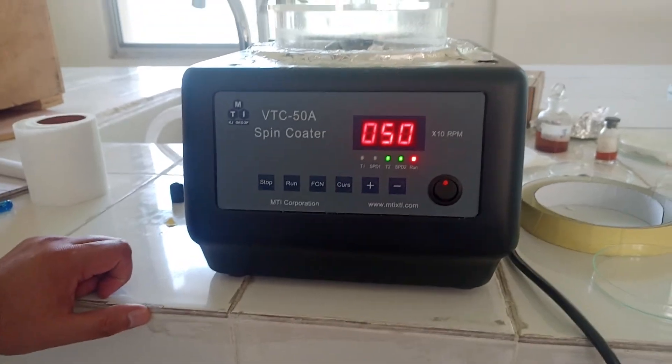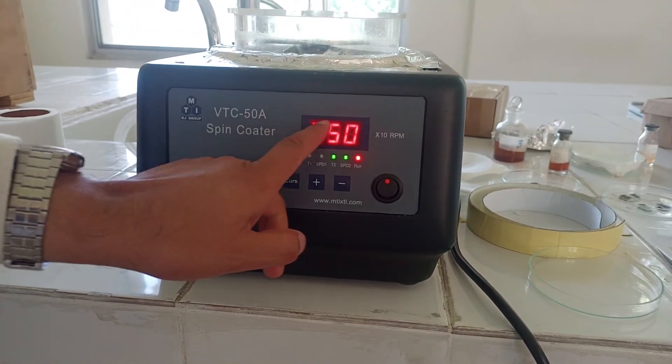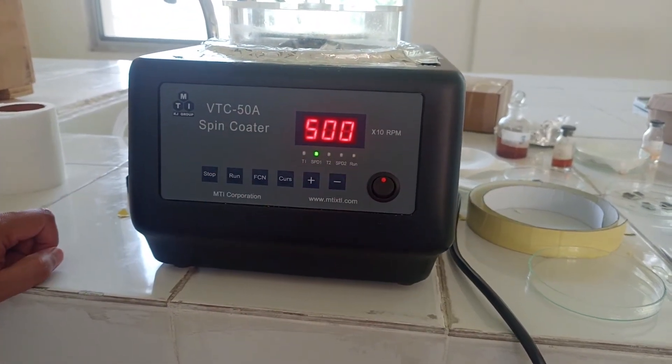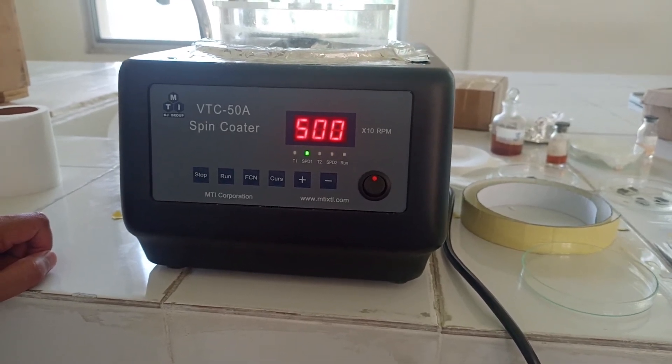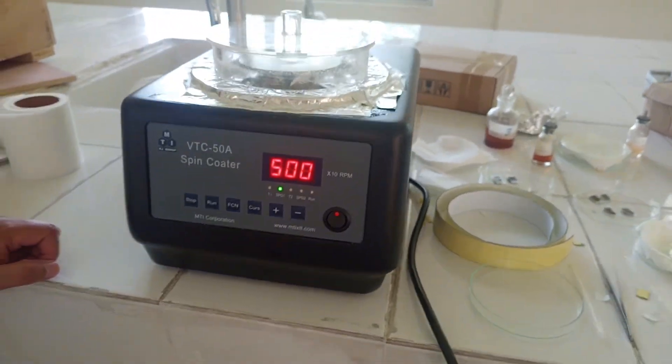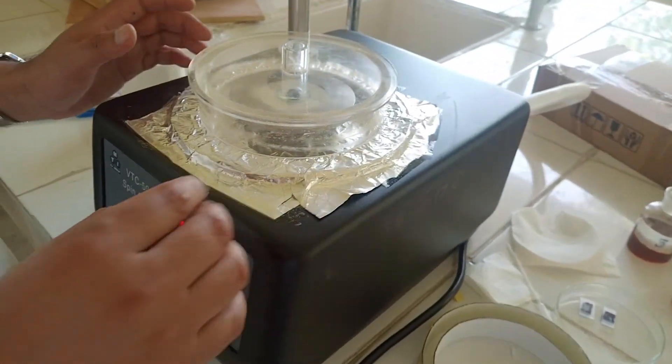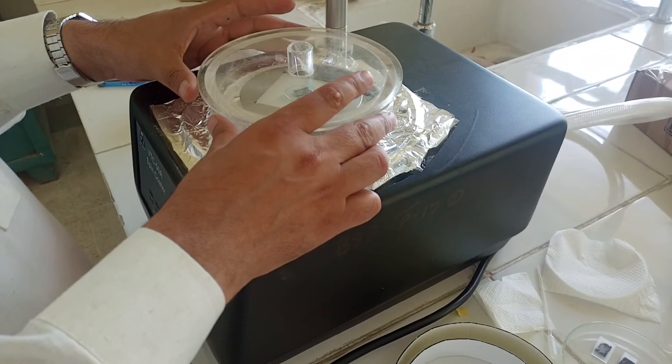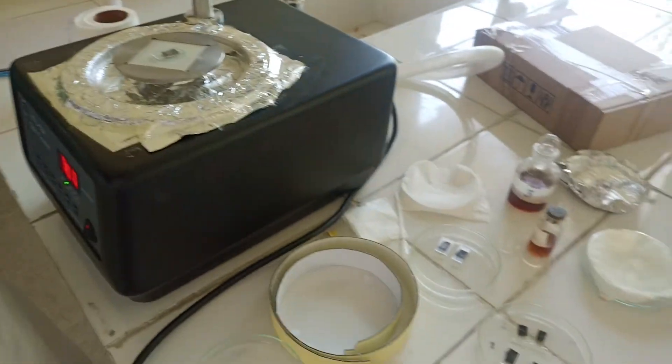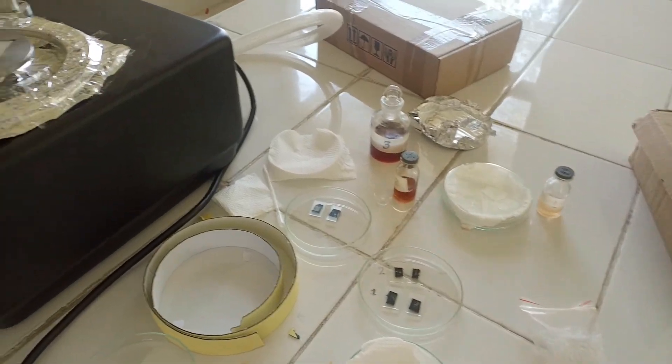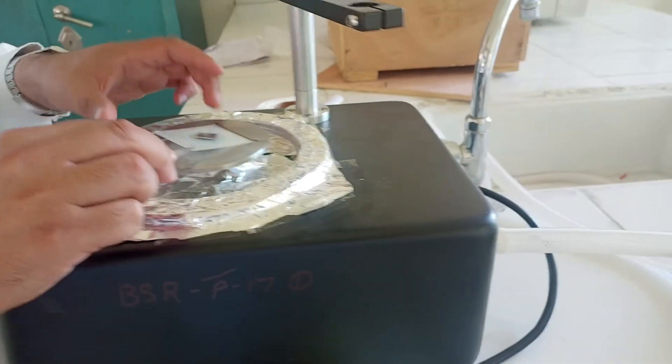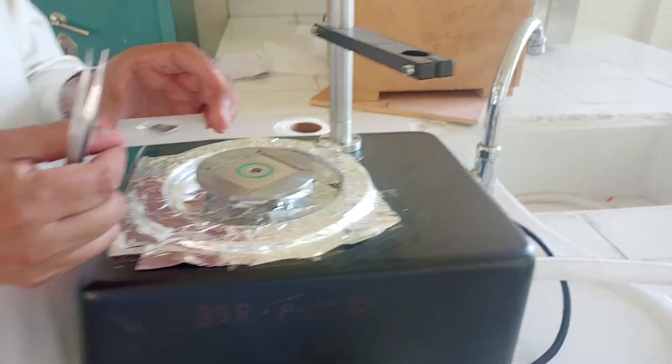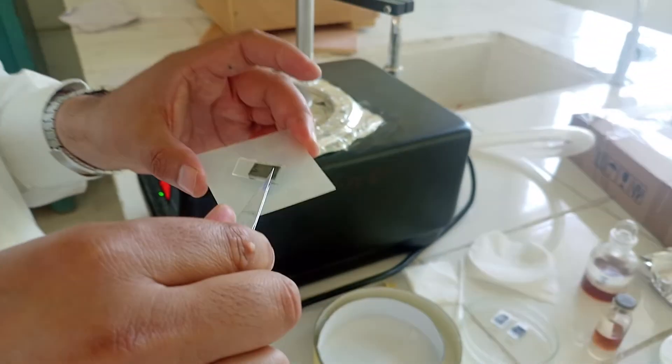This is our display. This display shows our revolution and time. Now it has been stopped. We will put off our lid after it has stopped, and then we will remove our slide from this. We can take it out.